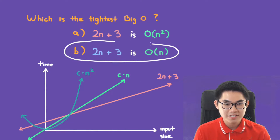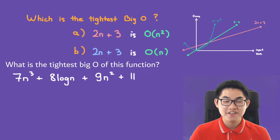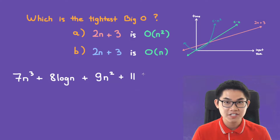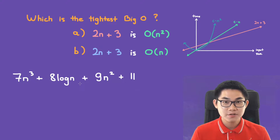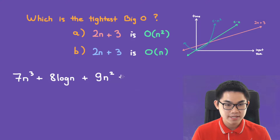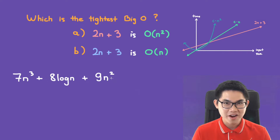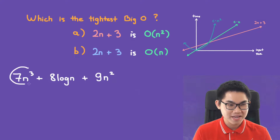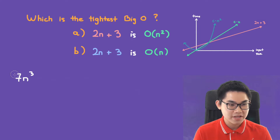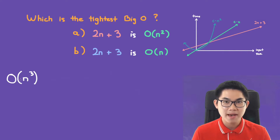I also want to show you the fast way to find the tightest Big O of a function. For example, take a function with multiple terms. Step one: get rid of constants like 11. Step two: choose the largest term — out of n³, log n, and n², the largest is n³, so discard the others. Step three: get rid of the coefficient. This tells you the function is O(n³).